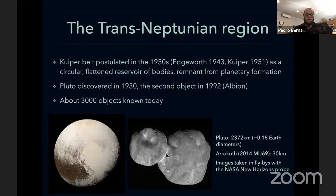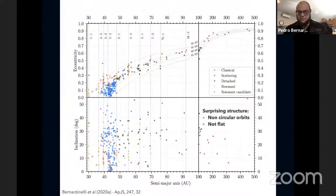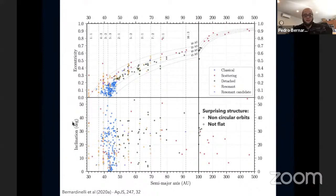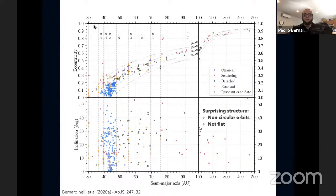Nowadays we know about 3,000 objects in this region, and one thing that became immediately obvious once these objects started being discovered is that there is a lot of surprising structure in the Kuiper Belt. Showing the semi-major axis, eccentricity, and inclination of all objects found with the Dark Energy Survey, you can see that the trans-Neptunian region is not just a pile of circular and coplanar orbits — we have non-circular orbits and orbits that are not flat. This means the standard theory of accretion is not enough to explain the trans-Neptunian region.